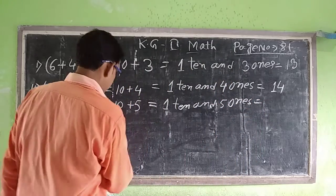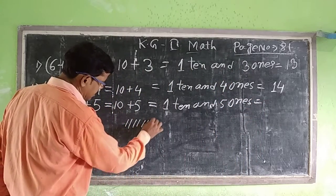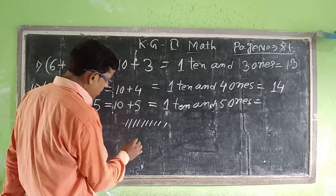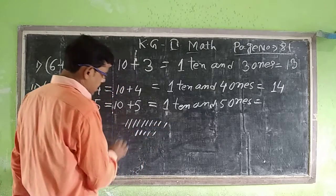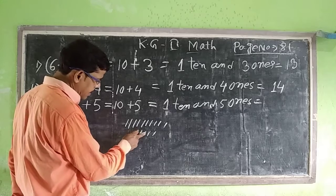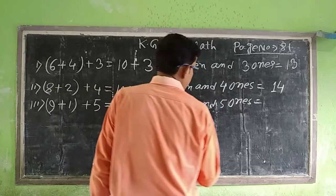Counting: 1, 2, 3, 4, 5, 6, 7, 8, 9, 10, and 5. 1, 2, 3, 4, 5. 10 and 5: 11, 12, 13, 14, 15. Correct.